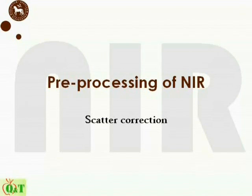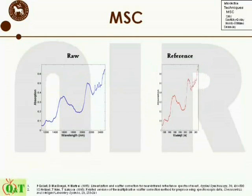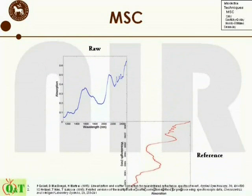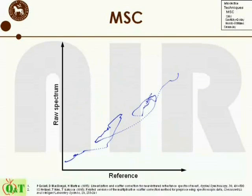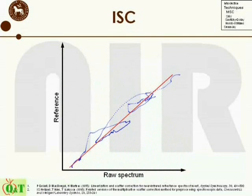First we'll have a look at MSC and ISC. In order to do the corrections for both of these, you have to plot the raw spectrum versus the reference, or vice versa. After this plot has been established, the best-fitted line according to regular least squares regression is found. For MSC, the reference spectrum is along the x-axis and the raw is along the y-axis. The case is opposite for ISC — hence the name inverse scatter correction.